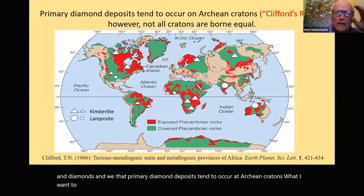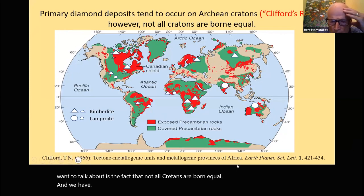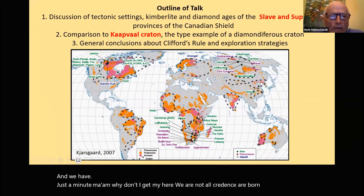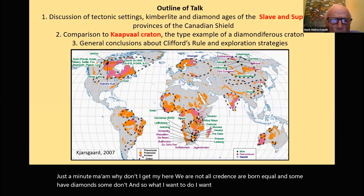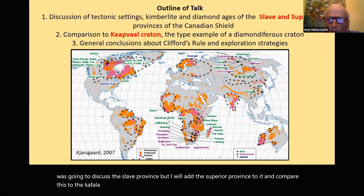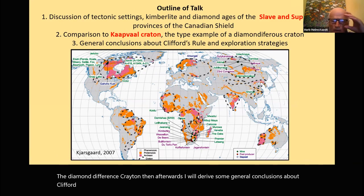Not all cratons are born equal — some have diamonds, some don't. I want to discuss the Slave Province and add the Superior Province to it, comparing them to the Kaapvaal Craton, which is the type example of a diamond-bearing craton. Afterwards, I'll derive some general conclusions about Clifford's Rule and exploration strategies.